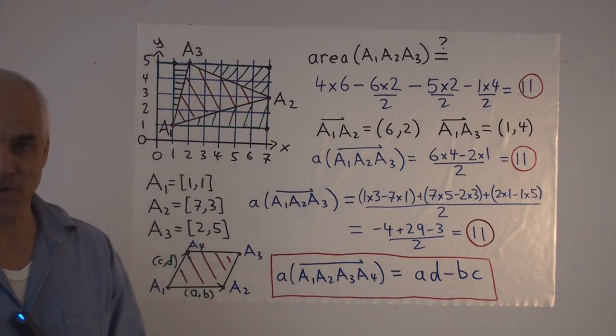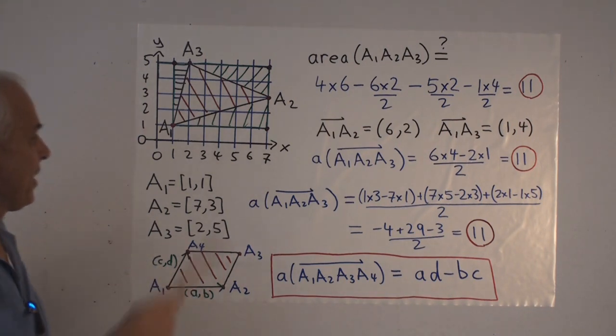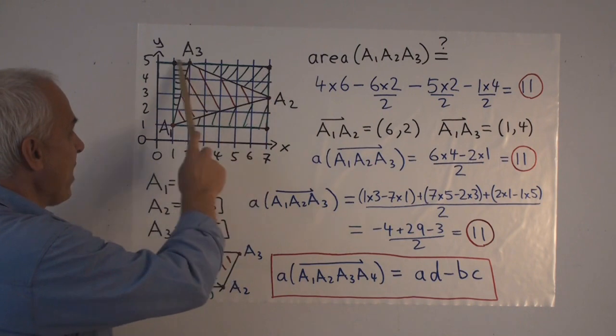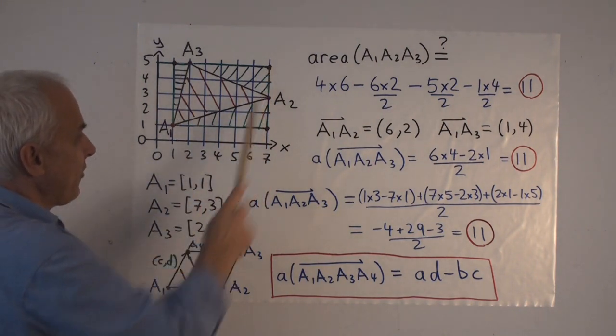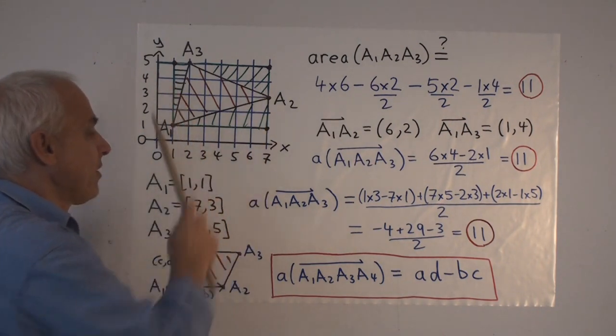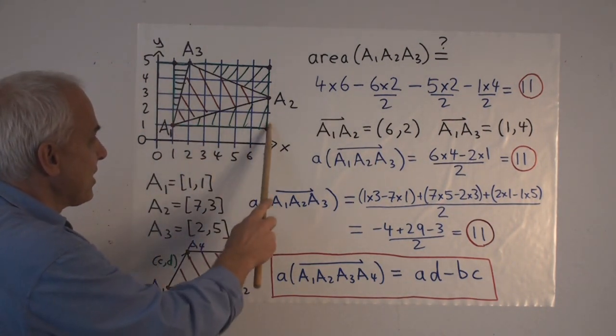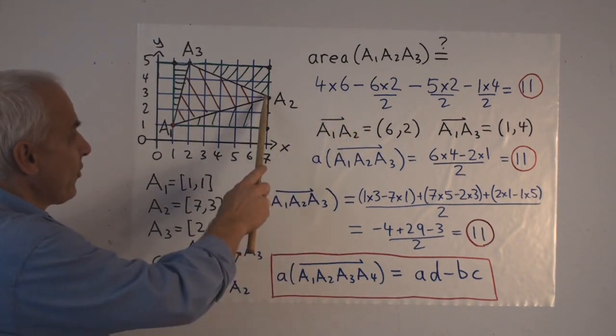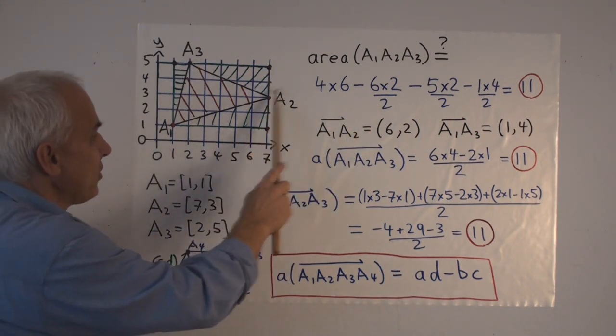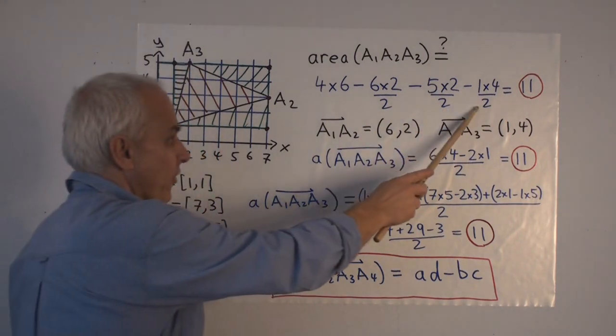Well, let's start off with our naive definition. And take the area of this big rectangle, which is 6 times 4. And subtract the areas of these three green triangles. This one here has area 6 times 2 over 2. This one has area 5 times 2 over 2. And this one has area 1 times 4 over 2.